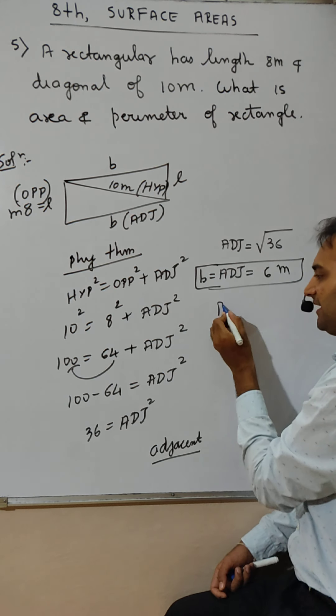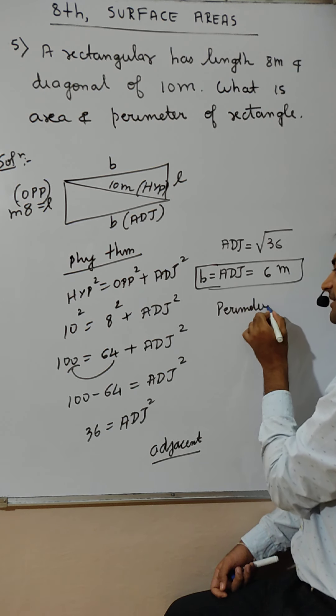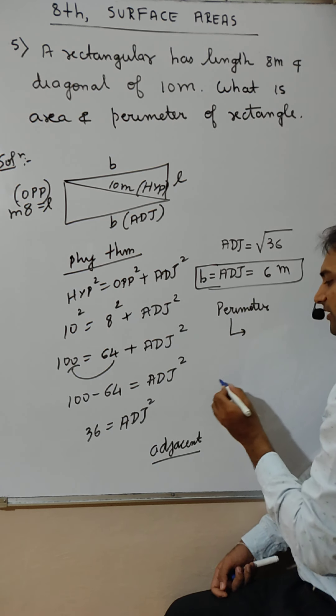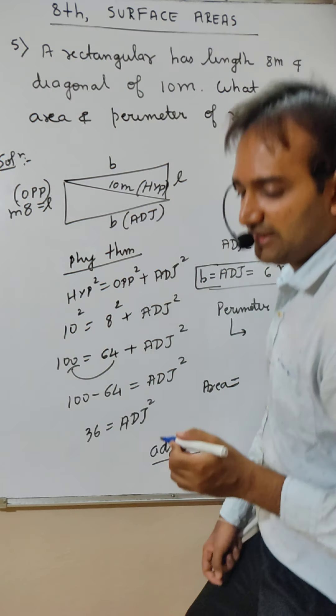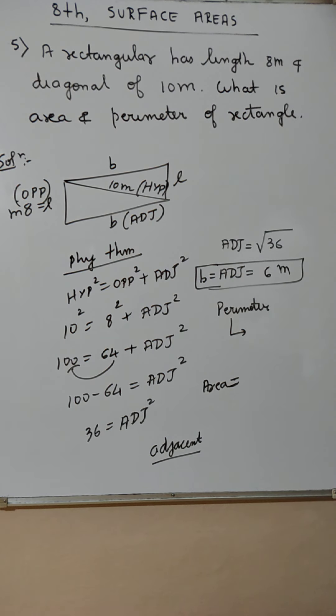Ab tu bol perimeter kya hai ga? Or area kya hai ga? Perimeter ka formula kya? Area ka formula kya? For a rectangle? Come on. Outer boundary ko add karo. Perimeter ka formula hai.